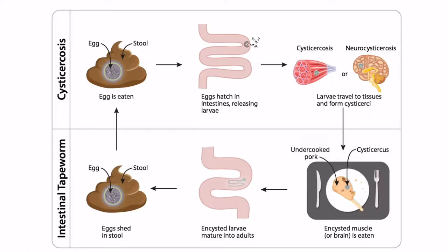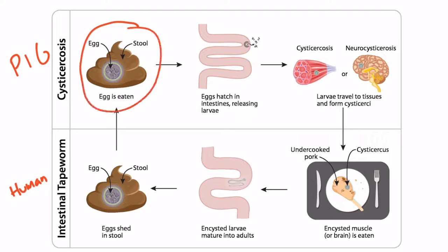Understanding this process will really help you understand why there are two different presentations or diseases created by this parasite. The top half of the diagram usually takes place in a pig, and the bottom half usually takes place in a human. First, the pig will eat an egg, which is found in stool, and the stool with the egg usually contaminates the pig's food, which is why the pig ate it. The egg then enters the intestines and releases larvae, which you can see right here.